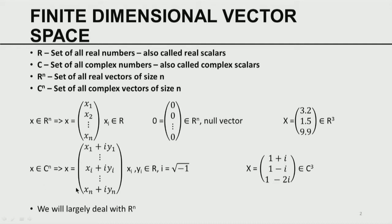Here is an example of a complex vector. In a complex vector there are n components, each of which is a complex number. The ith component is Xi plus iYi, and the nth element is Xn plus iYn, where Xi and Yi are real numbers and i is the unit imaginary number, the square root of minus 1. An example is the complex vector (1+i, 1-i, 1-2i) of size 3. In this course, we will largely deal with real spaces, especially R to the n.